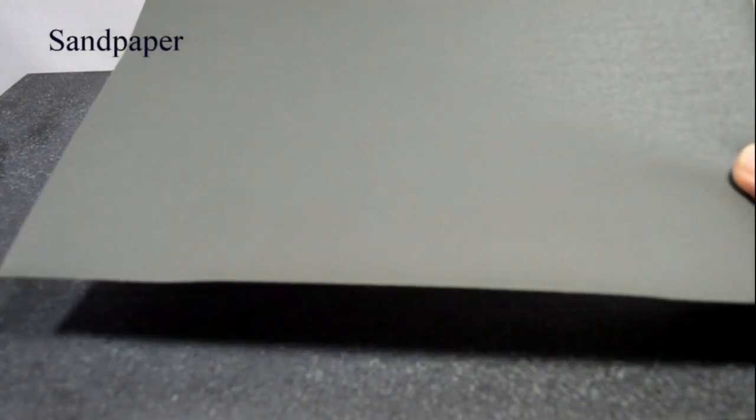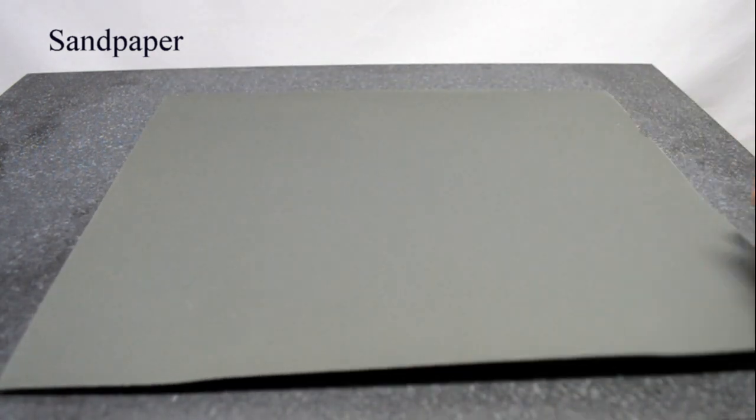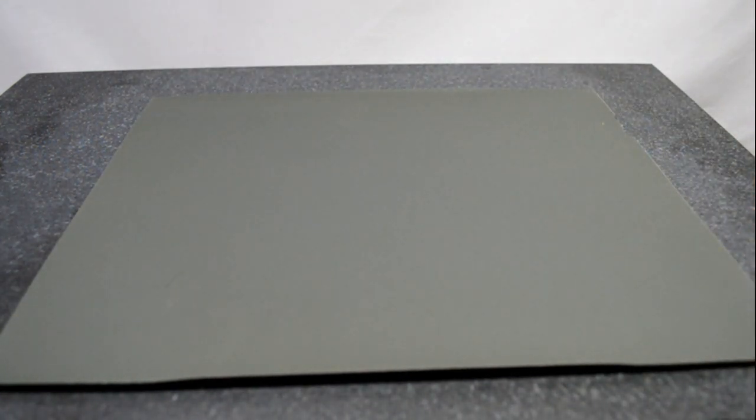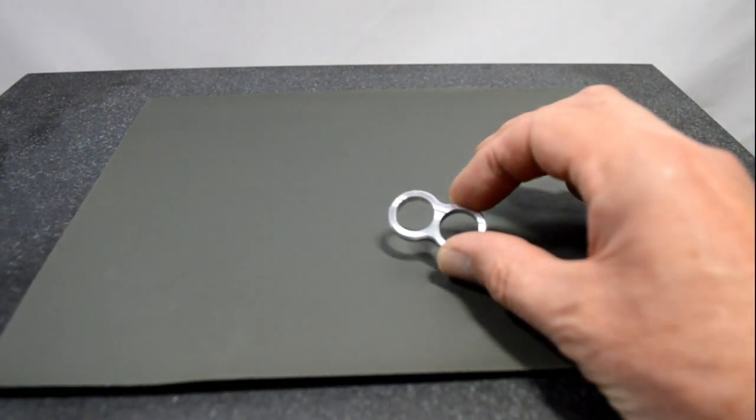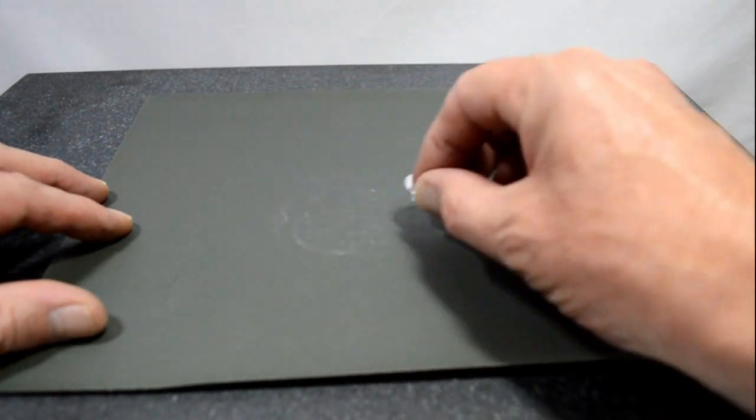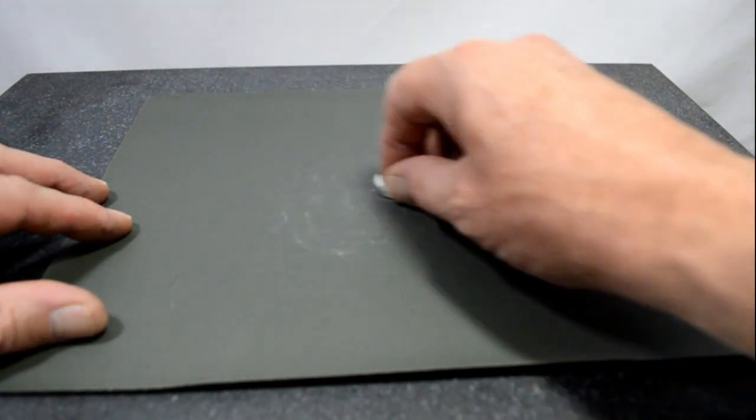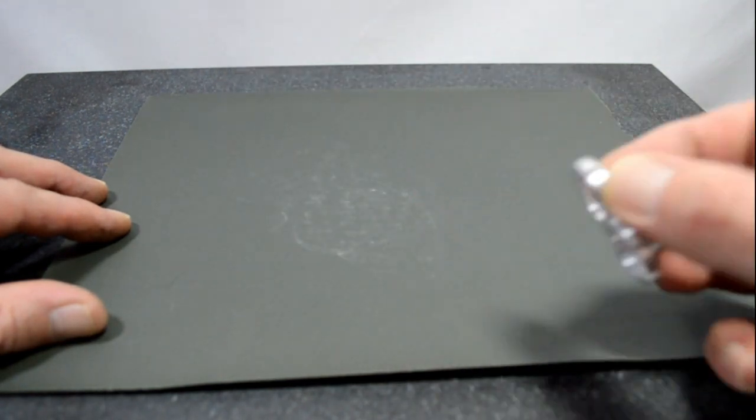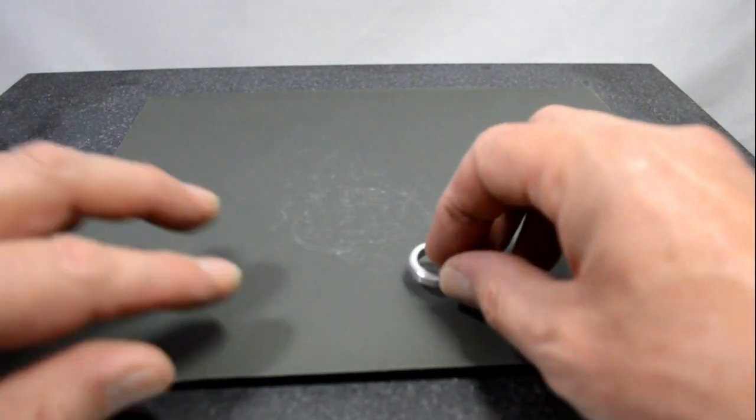Sandpaper is used in this instance for lapping. Flat lapping done on a surface plate. Knock the burrs down off of this after it comes out of the machine. So these are the basic tools and techniques of deburring.